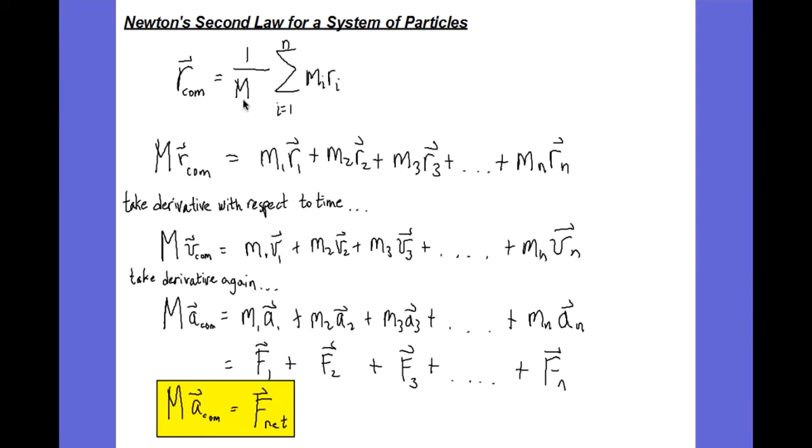So let's cross multiply the 1 over m to the other side, so I have m times r on the left side, and let's expand the sigma notation to show all the terms. Then let's take the derivative with respect to time. We know that the derivative of position with respect to time is velocity. So all these terms, the position vector becomes a velocity vector.